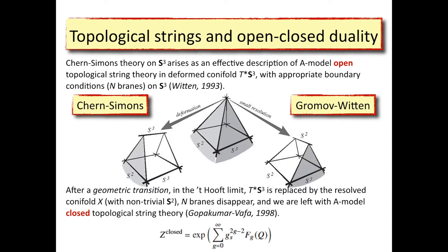This is also an example of open-closed transition. On the right-hand side, it is natural to compute closed Gromov-Witten invariants. These Gromov-Witten invariants give a series in topological string coupling g_s, and by resummation during this transition, this is related to amplitudes in Chern-Simons theory, which are usually expressed in Q = exp(g_s).